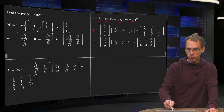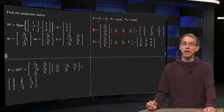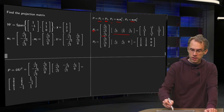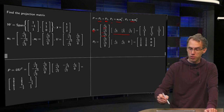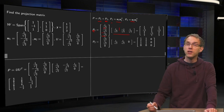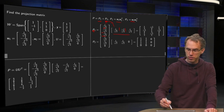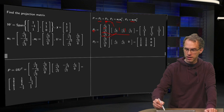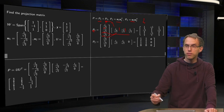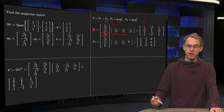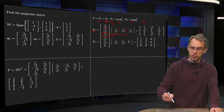Here you have your u1 and u1 transpose; again we can use the row-column rule. Here we have our very short rows and very short columns. So the first element is 1/3, second element is −1/3, third element is 1/3. There you have the first column, and you can do the second and third columns yourself.